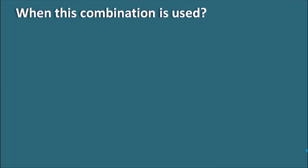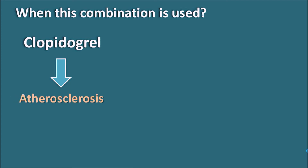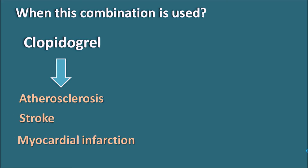Now let us see when this combination is used. Clopidogrel is an anti-platelet agent and can be used in various conditions where there is increased clot formation, such as atherosclerosis and formation of atheromatous plaque within blood vessels. It can also be used in stroke as well as myocardial infarction. In all these conditions, clopidogrel can be given.